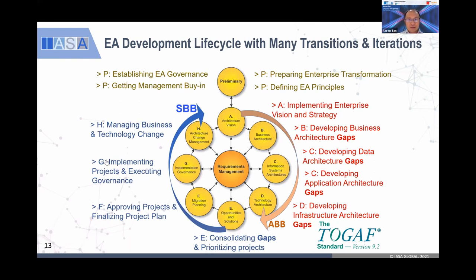This is basically the cycle of how EA drives the continuous transformation journey — from A, B, C, D, E, F, G, H and then back to A. The interesting part is the middle: the requirement management. In practical life, requirement management is like a sensor — any changes to any domain, the sensor knows exactly which one will be impacted. Like the human body — we have a brain that controls all the sensors. Even our feet — when you step on something you feel pain and the brain knows exactly whether it's the left or right foot. This is what happens in the enterprise.